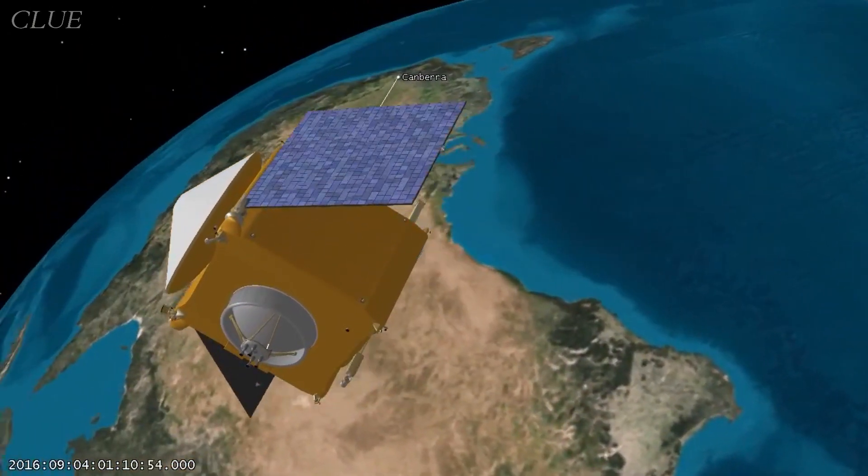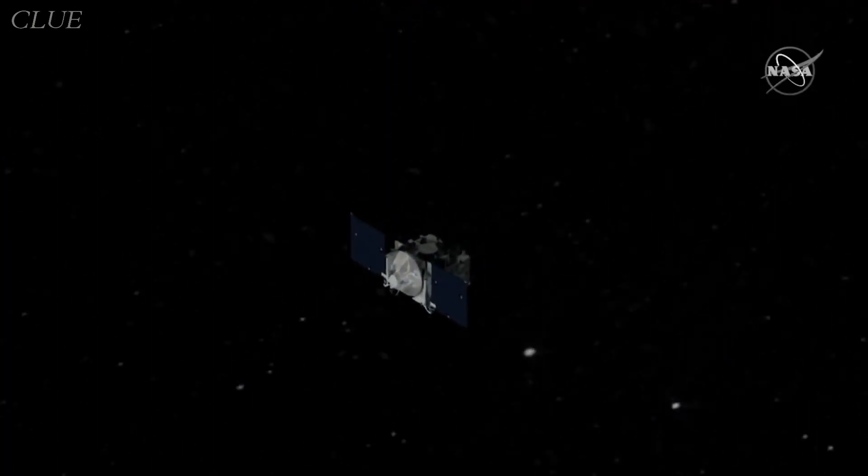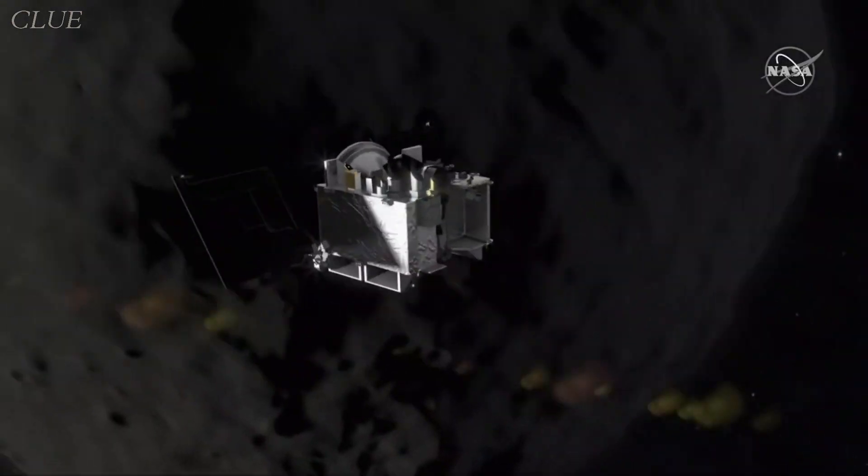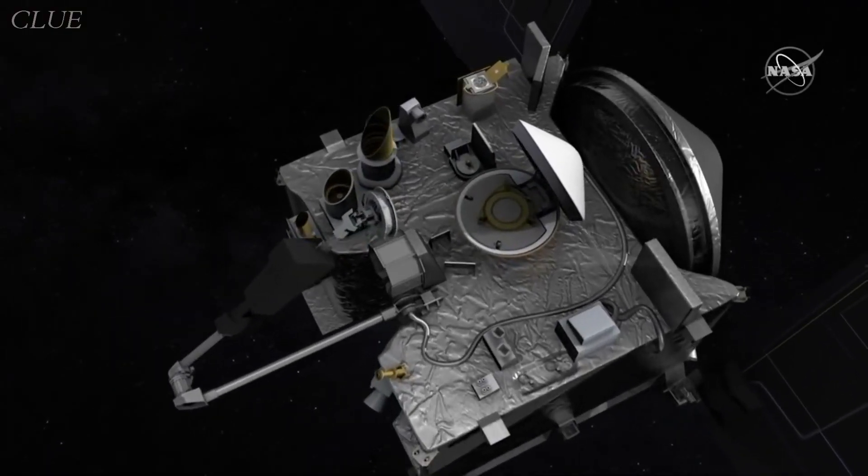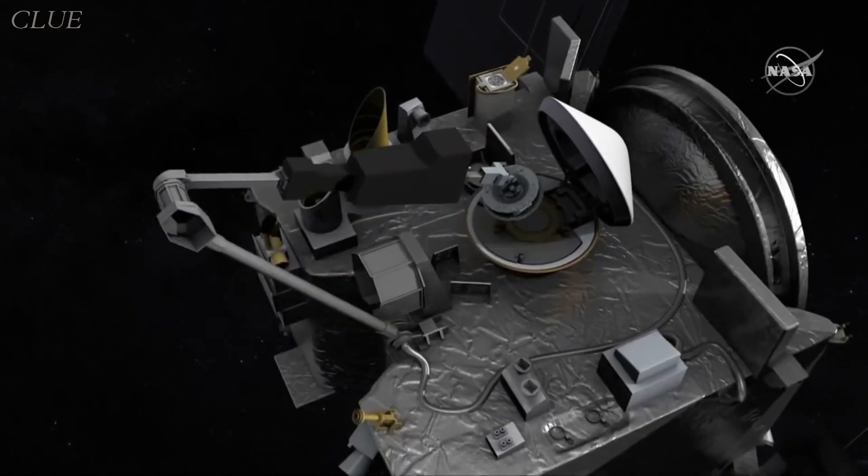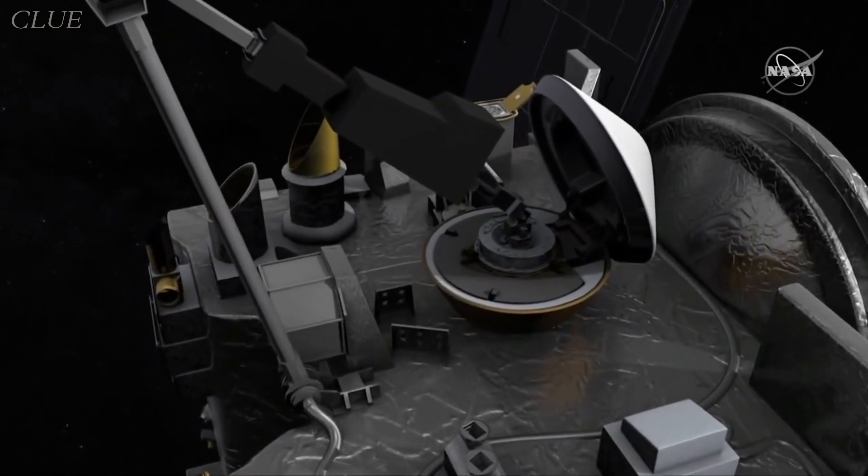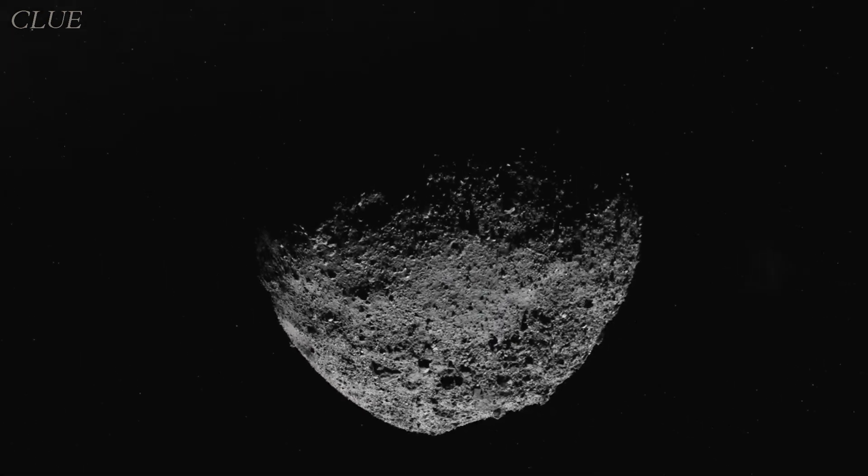NASA's OSIRIS-REx mission was a spacecraft mission designed to study and collect a sample from an asteroid called Bennu. OSIRIS-REx was part of NASA's New Frontiers program, which focuses on exploring the solar system with relatively low-cost missions. Here are the key details about the mission.